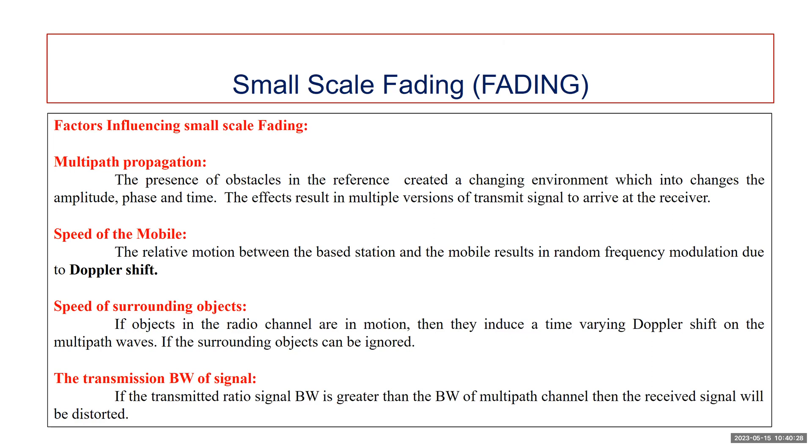Third is speed of surrounding objects. If objects in the radio channel are in movement, they induce a time varying Doppler shift on the multipath waves. If surrounding objects can be ignored, we ignore them. But if the surrounding objects move at a greater rate than the mobile, then this effect is dominant in small scale fading. Otherwise, the motion of surrounding objects may be ignored.